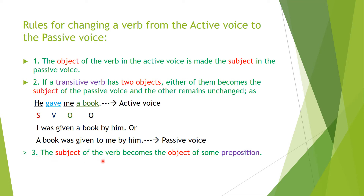Rule number three: the subject of the verb in the active voice becomes the object of some preposition in the passive voice. For example, 'He' is the subject of the verb in active voice; in passive voice, it becomes the object of a preposition. As you can see here, 'by' is the preposition and 'he' becomes the object of that preposition, i.e., 'by him.' Normally 'by' is the preposition used, though sometimes 'to' is also used. So now we know where 'by' comes from.